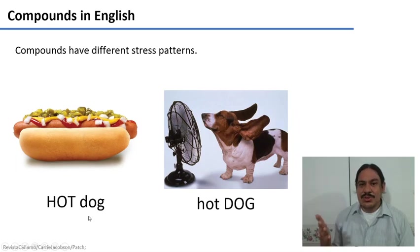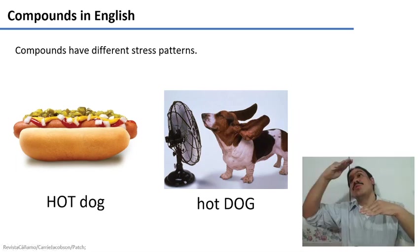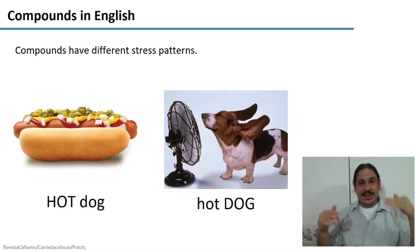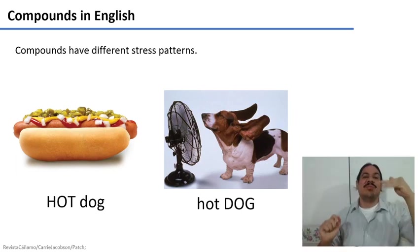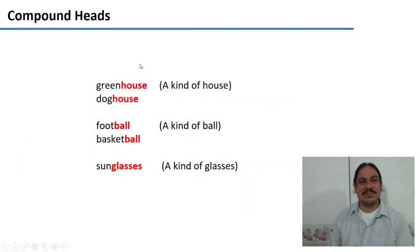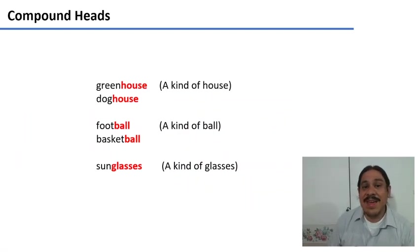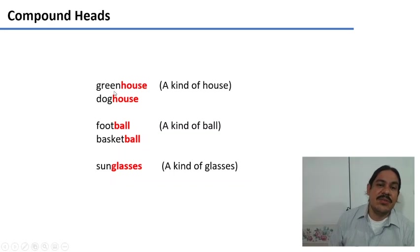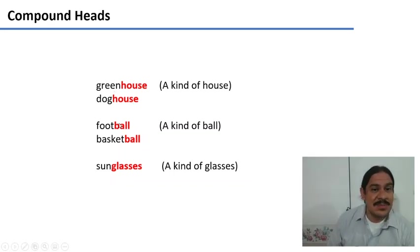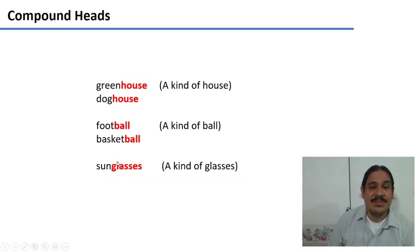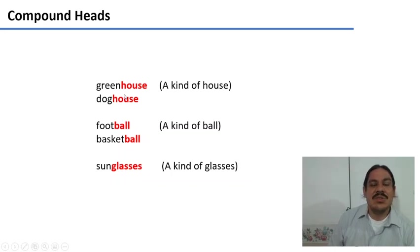For example, you could live in a white house, but none of you live in the White House — with the stress on the first word. Compounds have heads, which are like the main word in the structure. For example, a greenhouse and a doghouse are kinds of houses; footballs and basketballs are kinds of balls; and sunglasses are a kind of glasses. These are called the head of the compound.